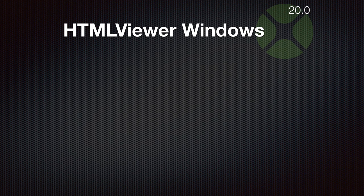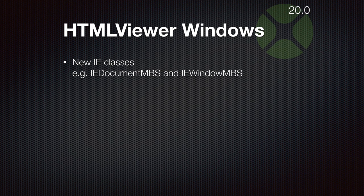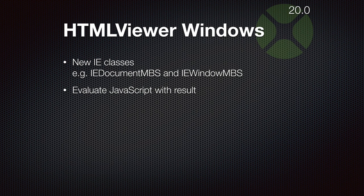For the HTML viewer on Windows we got new classes. Instead of having all the methods on the HTML viewer class as extensions, we now have dedicated classes for document, for windows, and for other things. You can now evaluate JavaScript and get the result back. For over 10 years you could already run JavaScript, but now we can not just run it but also return the result directly. This allows you to write code on Mac, Windows and Linux and on all platforms get back the result immediately.